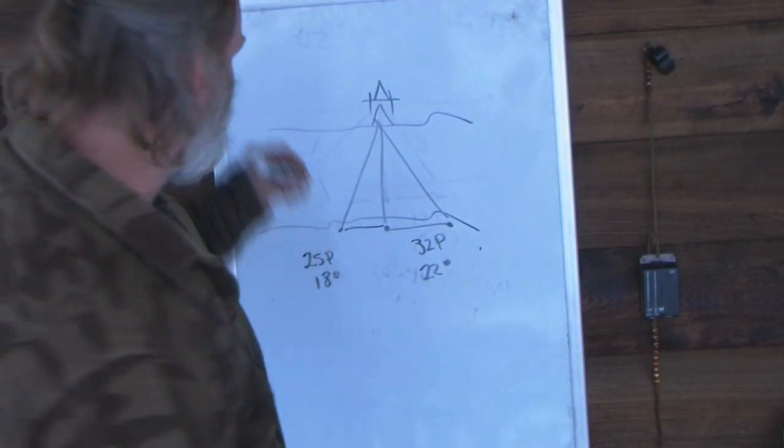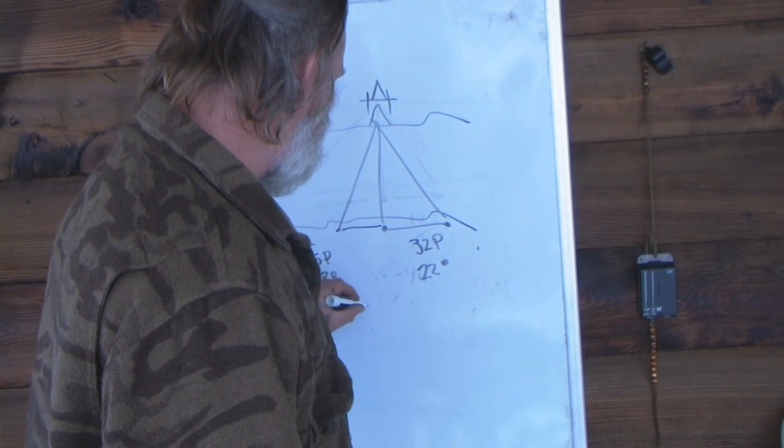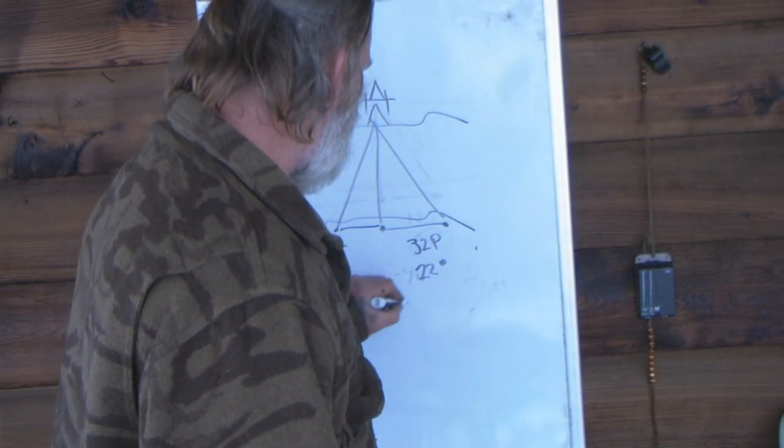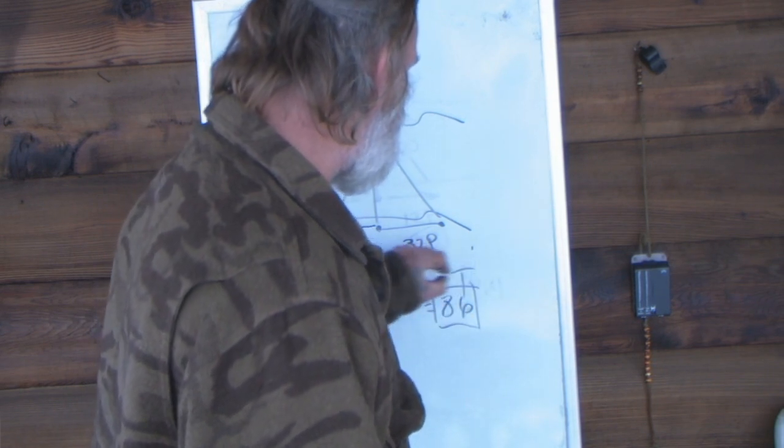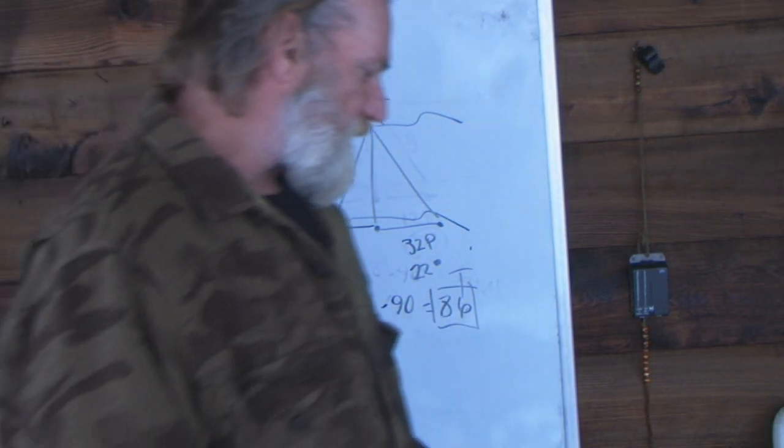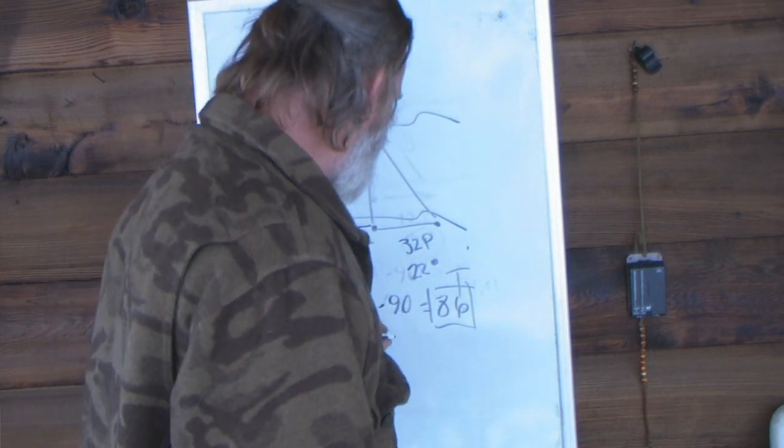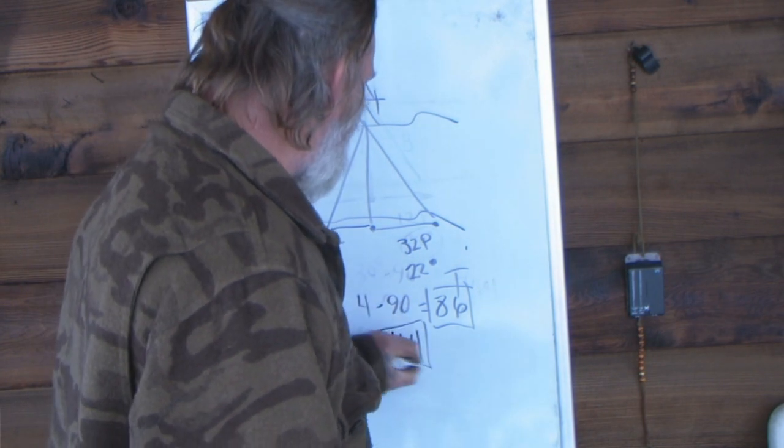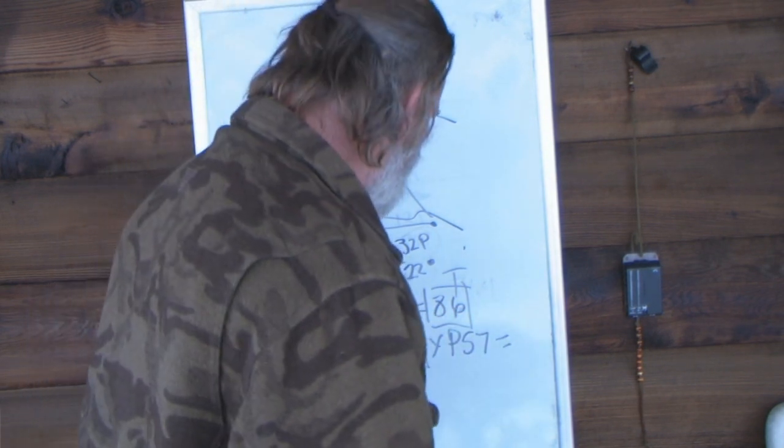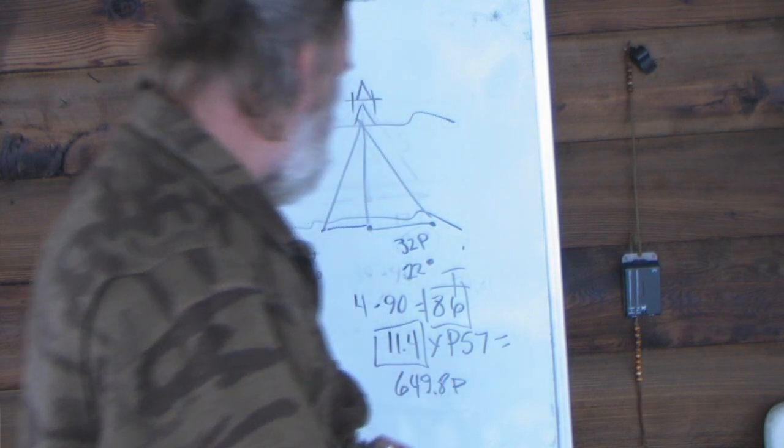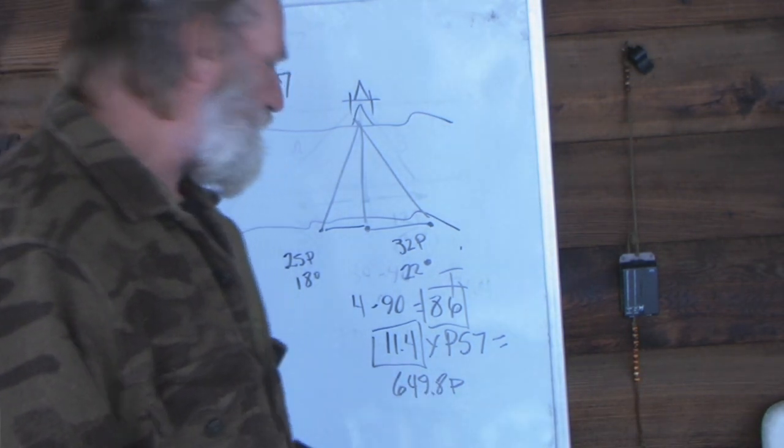So let's work this formula. We know our total paces are 57. The difference between 18 and 22 degrees is 4. If we subtract that from 90 degrees, it gives us 86. So we need the tan value of 86. In this case, the tan value of 86 is 11.4. 11.4 times our paces, which was 57, gives us 649.8 paces. That's our total paces, 649.8.